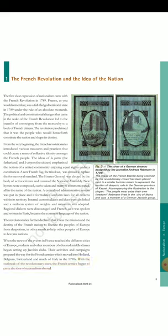Fig. 2: The cover of a German almanac designed by the journalist Andreas Rebmann in 1798. The image of the French Bastille being stormed by the revolutionary crowd has been placed next to a similar fortress meant to represent the bastion of despotic rule in the German province of Kassel. Accompanying the illustration is the slogan: 'The people must seize their own freedom.' Rebmann lived in the city of Mainz and was a member of a German Jacobin group.